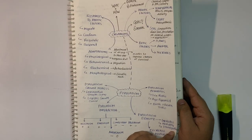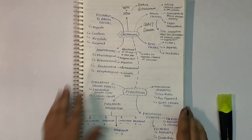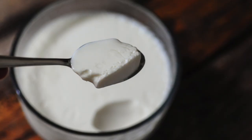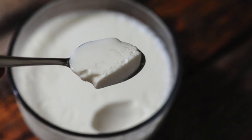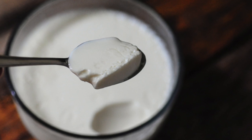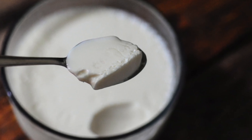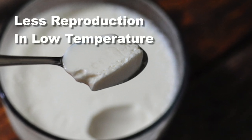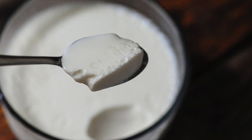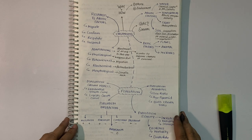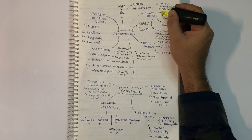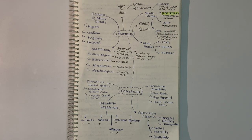Now let us move to the major abiotic factors. The first is temperature. A simple example from daily life: you don't put curd in the freezer to set it because organisms cannot tolerate very low temperatures, resulting in less reproduction and imperfect curd.